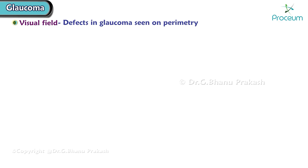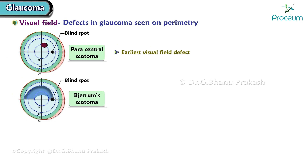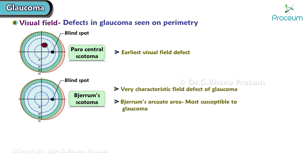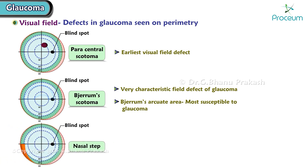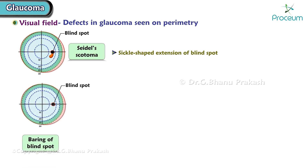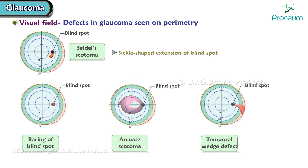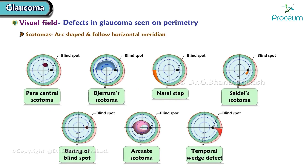The various visual field defects in glaucoma seen on perimetry are: paracentral scotoma, which is the earliest visual field defect; Bjerrum scotoma, a very characteristic field defect of glaucoma. The Bjerrum arcuate area is most susceptible to glaucoma. Nasal step is also a characteristic defect. Seidel scotoma is a sickle-shaped extension of the blind spot. Enlargement of the blind spot, arcuate scotoma, and temporal wedge defect are also seen.